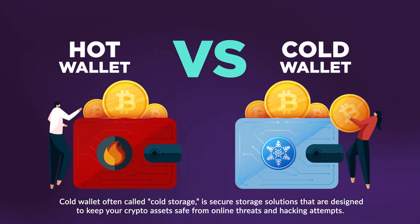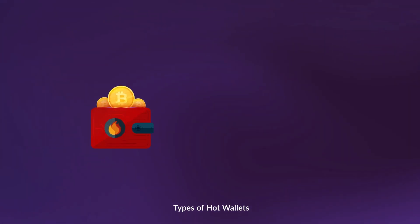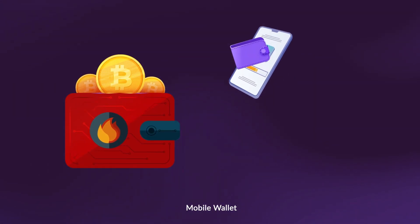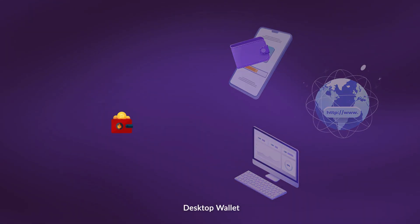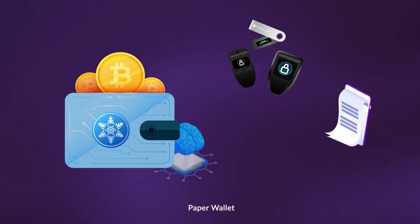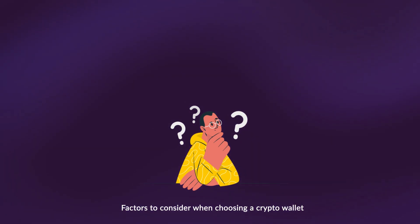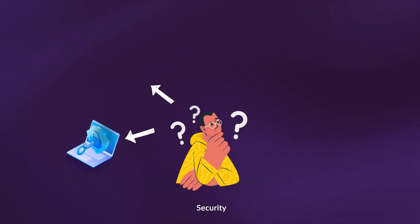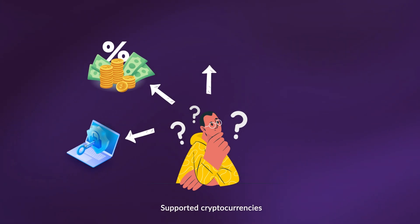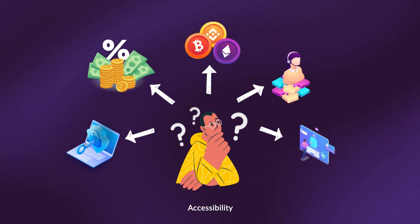Cold wallets, often called cold storage, are secure storage solutions designed to keep your crypto assets safe from online threats and hacking attempts. Types of hot wallets include Mobile Wallet, Web Wallet, and Desktop Wallet. Types of cold wallets include Hardware Wallet, Paper Wallet, and Brain Wallet. Factors to consider when choosing a crypto wallet include security, fees, supported cryptocurrencies, customer support, and accessibility.